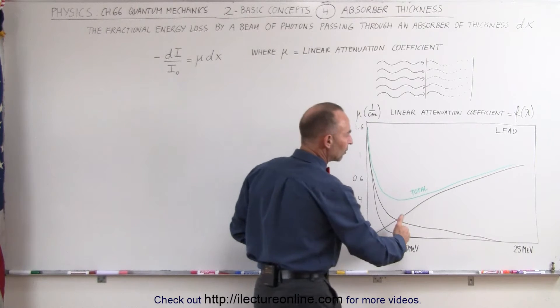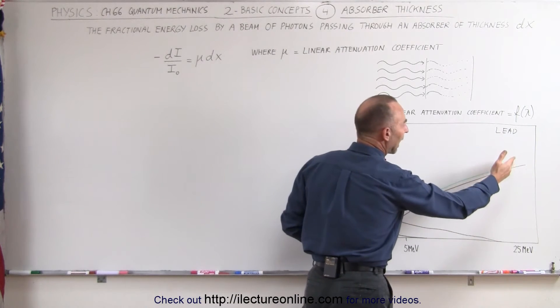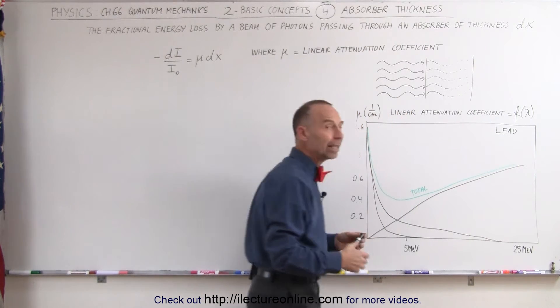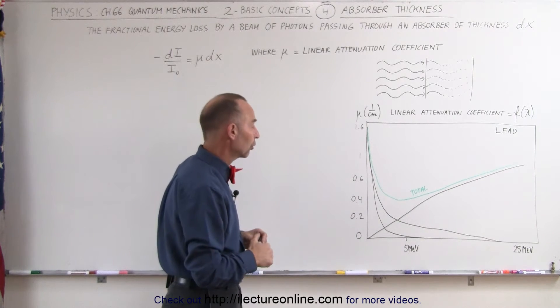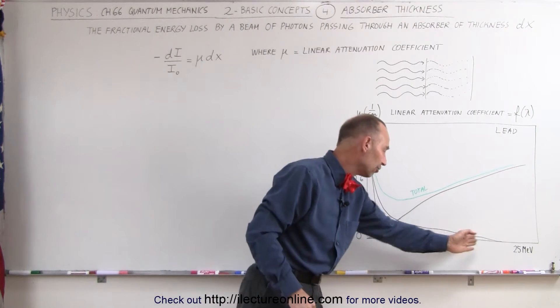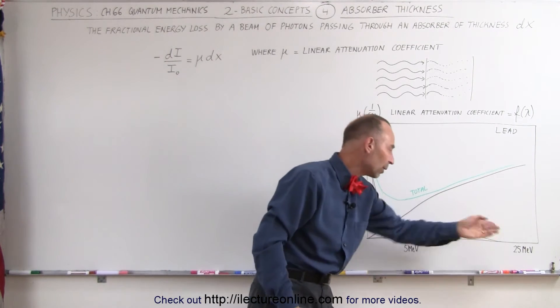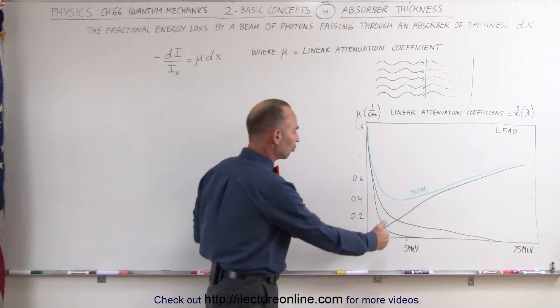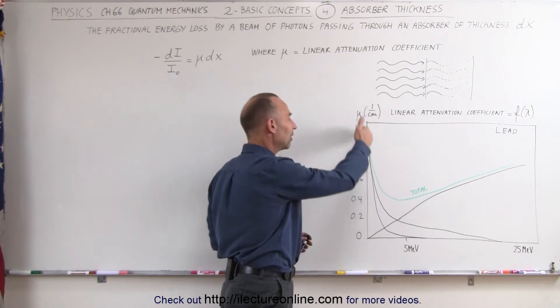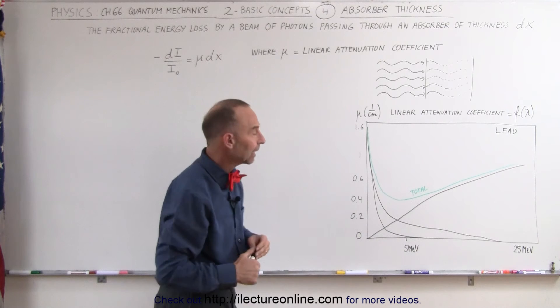But as the energies increase, lead becomes better at stopping the energy and therefore causing pair production to occur. But we're talking about very high energy photons of the 5 MeV to 25 MeV range. At the much lower energy levels, lead is fairly good at stopping incoming radiation.